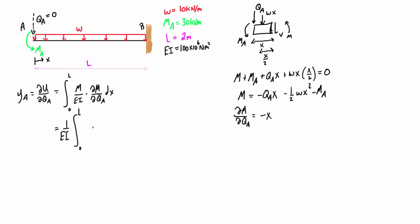What we're going to do is we want to set this equal to zero now when we plug it back in. So the whole first term here is going to go to zero, so we're left over with negative one half WX squared minus MA.